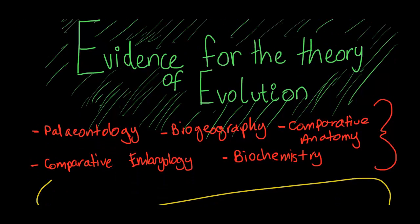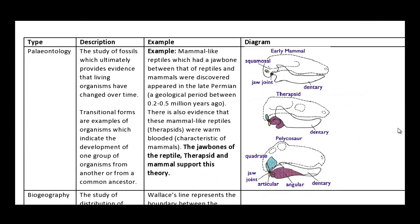First off I'm going to talk about paleontology and that is the study of fossils which ultimately provides evidence that living organisms have changed over time. Paleontology is very useful and the main reason is because you can actually derive these transitional forms which are examples of organisms which indicate the development of one group of organisms from another or from a common ancestor. These transitional forms actually help us in deriving this theory of a common ancestor as well as the development of a group of organisms.